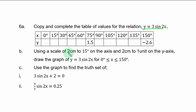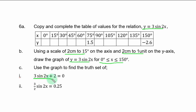Part B: using a scale of 2 cm to 15 degrees on the s-axis and 2 cm to 1 unit on the y-axis, draw the graph of y equals 3 sin 2s for 0 degrees less than or equal to s less than or equal to 150 degrees. Part C: use the graph to find the truth set of (1) 3 sin 2s plus 2 equals 0, and (2) 3 over 2 times sin 2s equals 0.25.